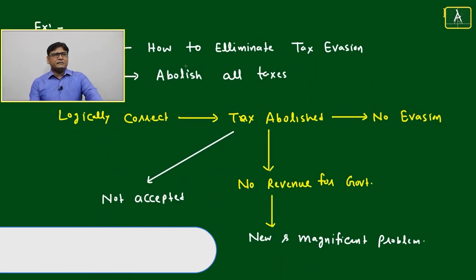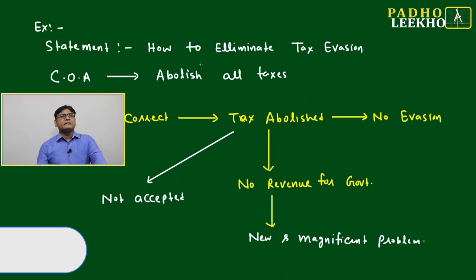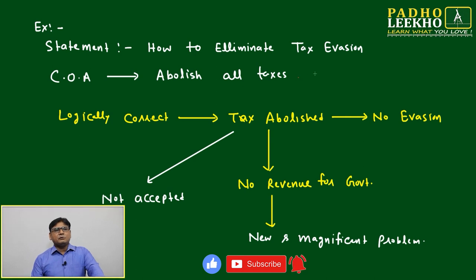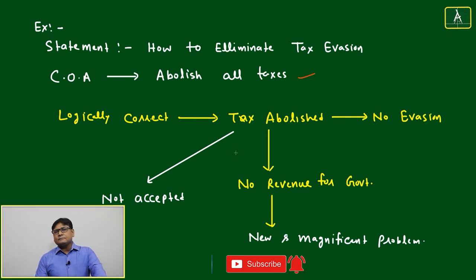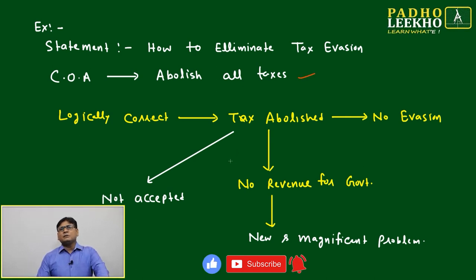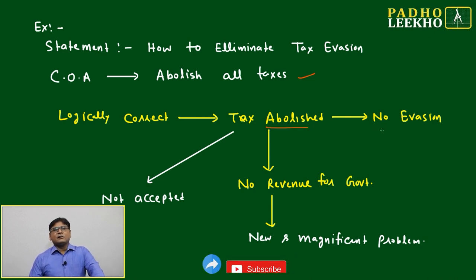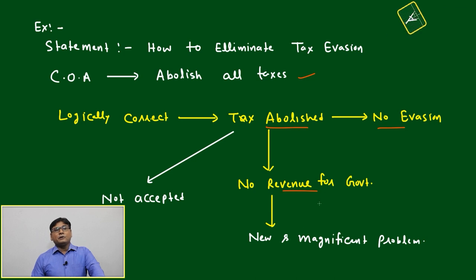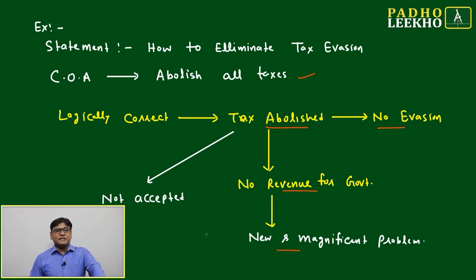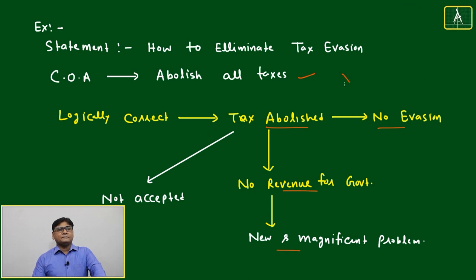To summarize: how to eliminate tax evasion — abolish all taxes. This may seem a good solution — remove the root itself. Logically correct: if tax is not there, no evasion. But there is no revenue for the government. It is a new and significant problem, and due to that, we cannot accept it.